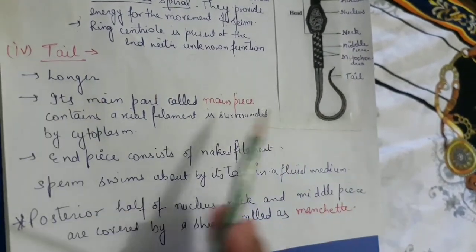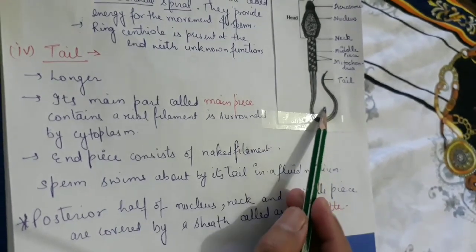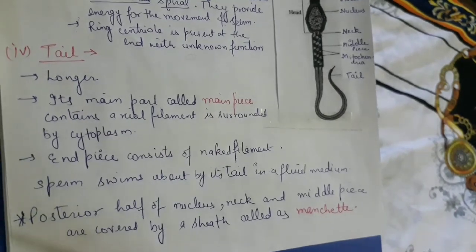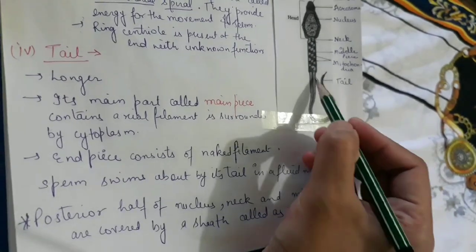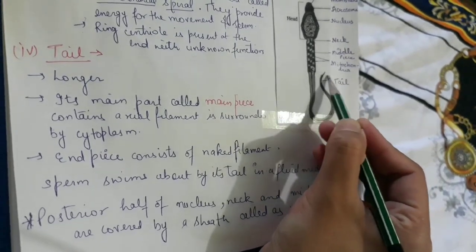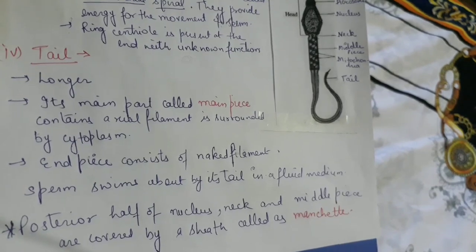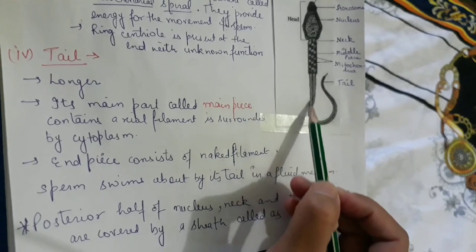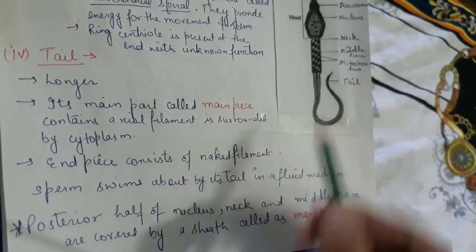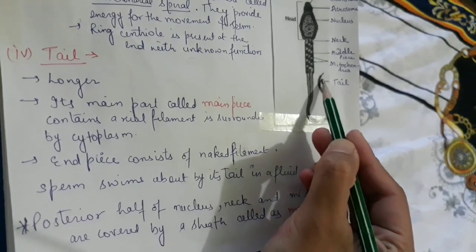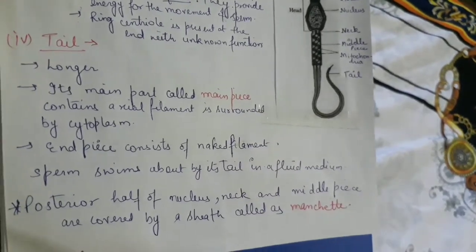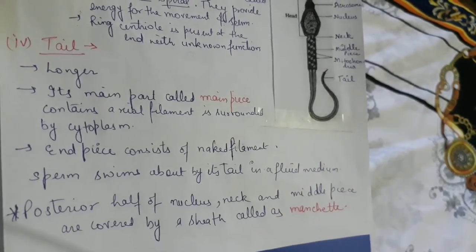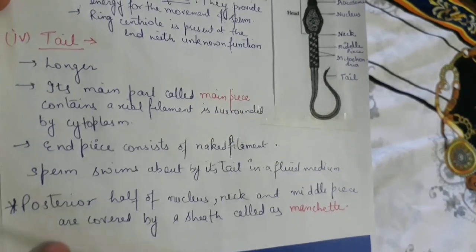The last part is the tail. The tail is the longer part and its main portion is called the main piece, which contains the axial filament surrounded by cytoplasm. At the very end is the end piece, which has no covering — it is naked, no membrane is visible around it. The tail helps the sperm to swim in the fluid medium, as the sperm needs to swim to reach the egg.